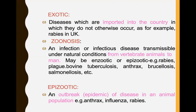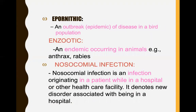Zoonosis: an infection or infectious disease transmissible under natural conditions from vertebrate animals to man. It may be enzootic or epizootic. Examples include rabies, plague, bovine tuberculosis, anthrax, brucellosis, and salmonella. Epizootic: an outbreak or epidemic of disease in an animal population — examples include anthrax, influenza, and rabies. Also includes an outbreak of disease in a bird population, and exotic and endemic diseases occurring in animals.